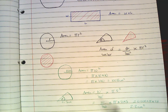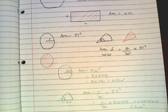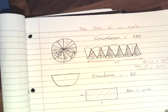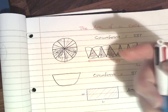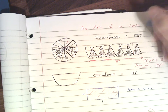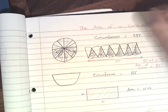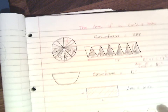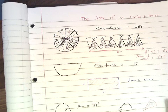So again, we just take our values and substitute them into the formula. That's basically how we look at the area of a circle, how we calculate it and where the formula comes from, and also the area of a sector. Hopefully that makes sense — thank you for listening.